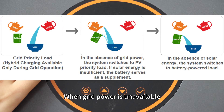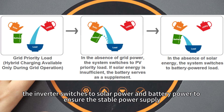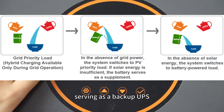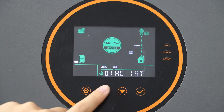When grid power is unavailable, the inverter switches to solar power and battery power to ensure a stable power supply. This mode is suitable for areas with relatively unstable grid power, serving as a backup UPS.